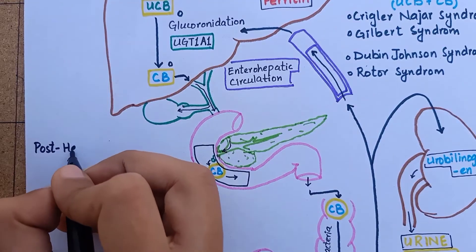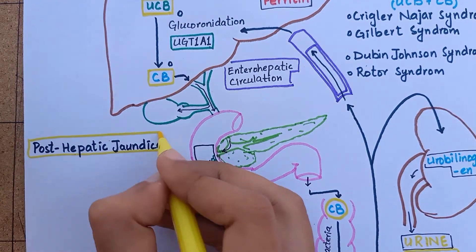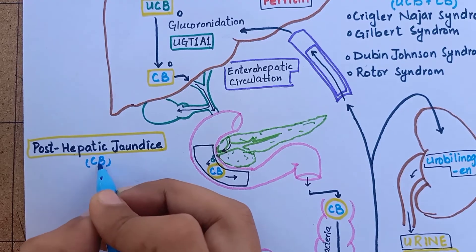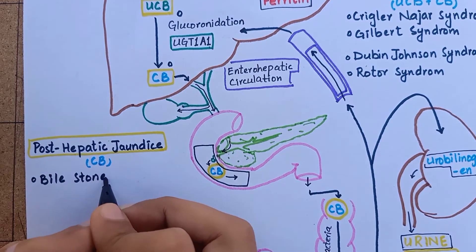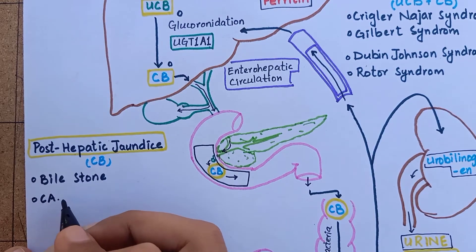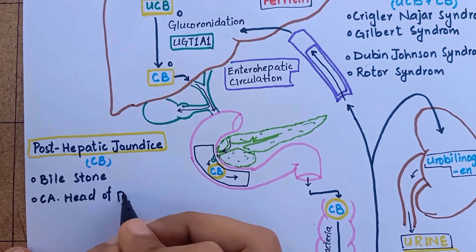The last category is post-hepatic jaundice in which there is only conjugated bilirubin accumulation in blood. It can be due to bile duct obstruction from bile stone or carcinoma of head of pancreas.